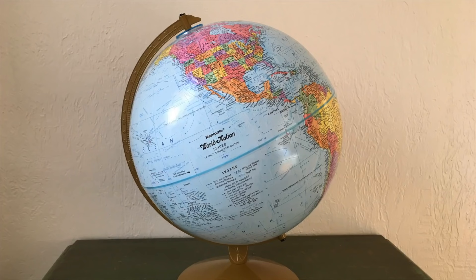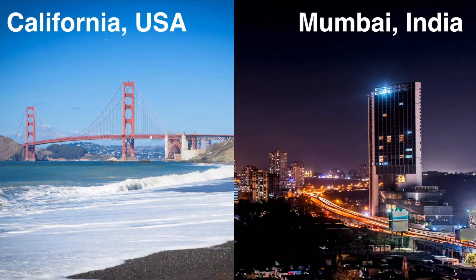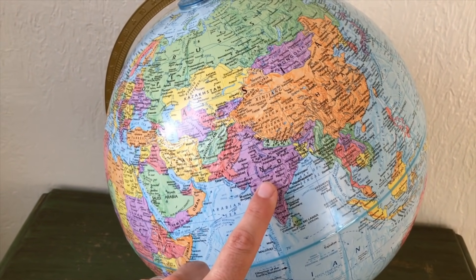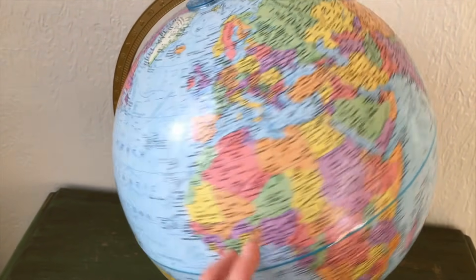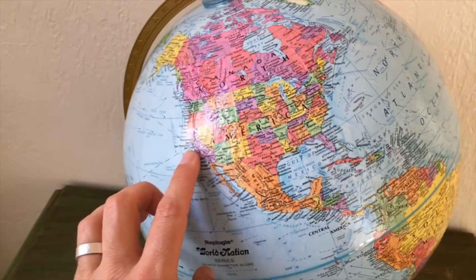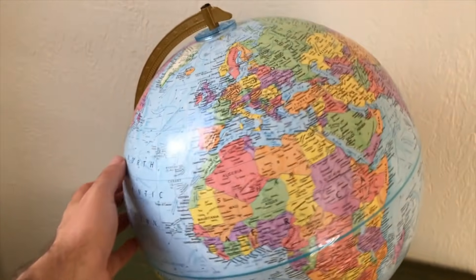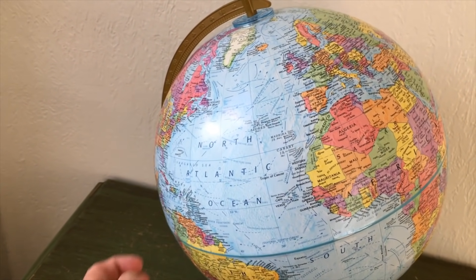To figure this out, one thing I would suggest we do is look at a globe. A globe is a model of the earth, a tool that helps us imagine the whole earth. Now, we know the difference between California and India is a really big difference in time — it's literally the difference between night and day. If you look at a globe, you can find India right here, but California is all the way over here. So we can see California and India are on opposite sides of the globe.